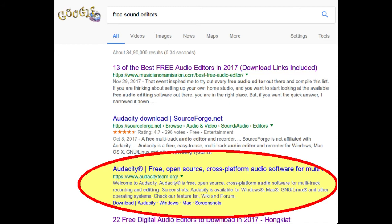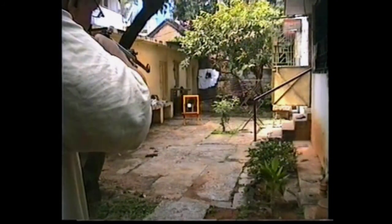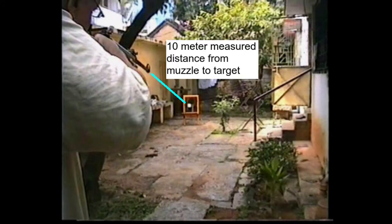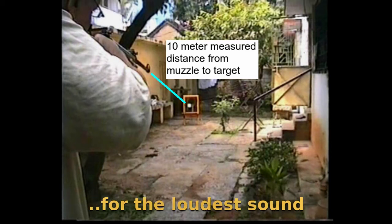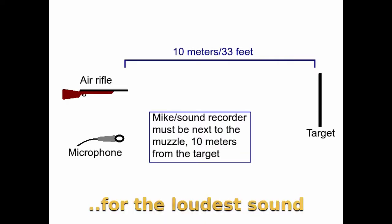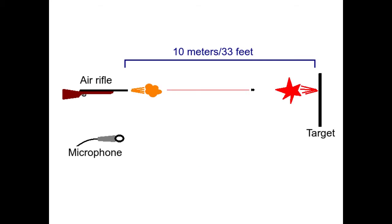In order to calculate muzzle velocity of your rifle using a sound recording, you need to record the sound of your rifle shooting and the pellet hitting a target. There are a couple of other things you need to do: place the muzzle of your rifle exactly 10 meters from the target, so you know how far the pellet has gone and how far sound has had to travel. You also need to place the microphone of the sound recorder close to the muzzle, so the mic is also 10 meters away from the target.